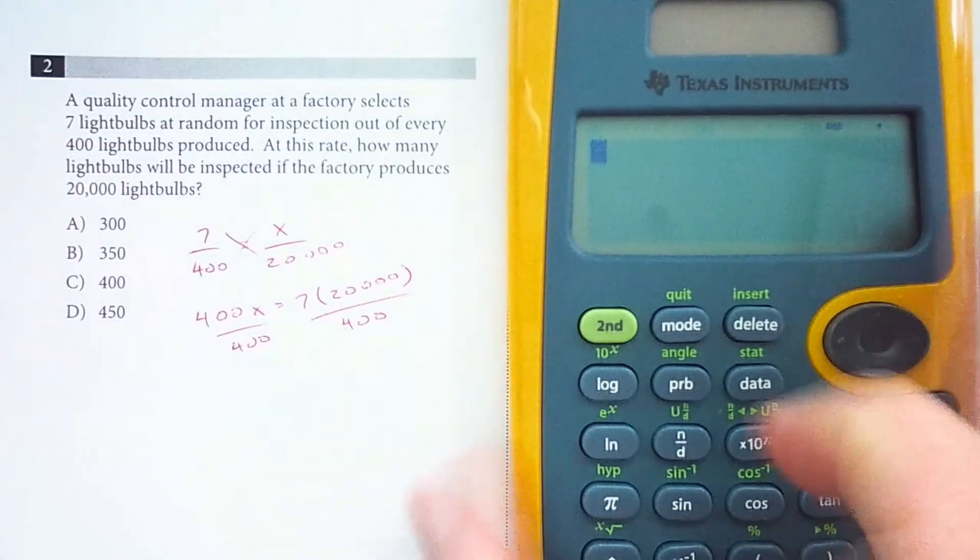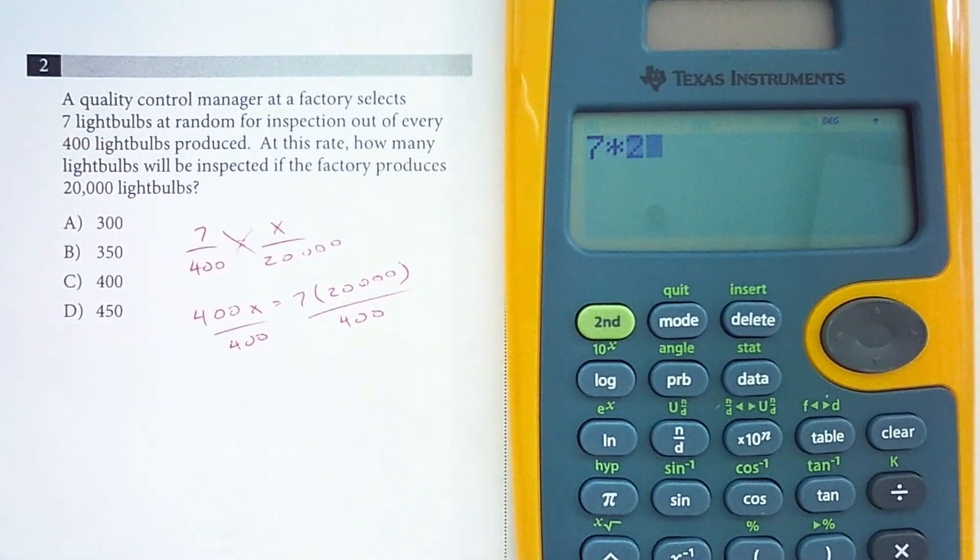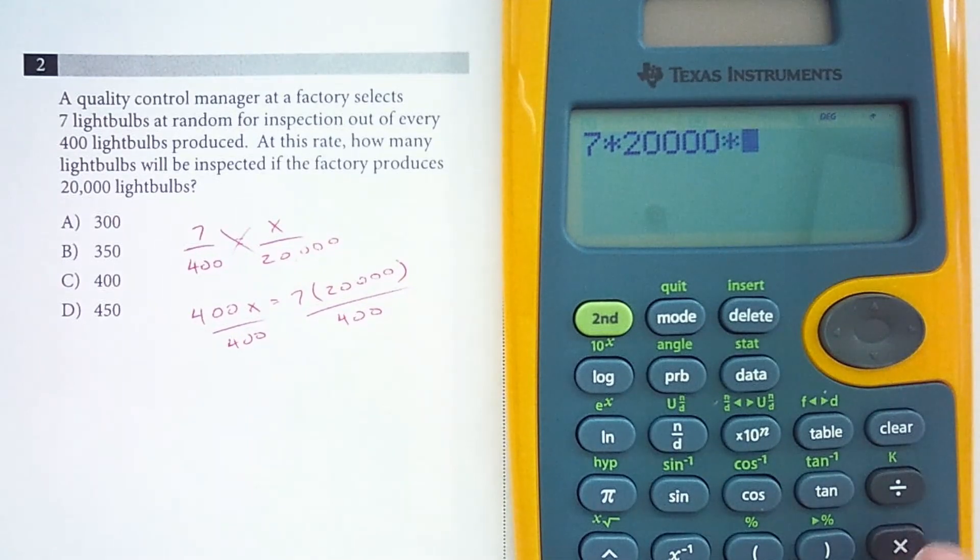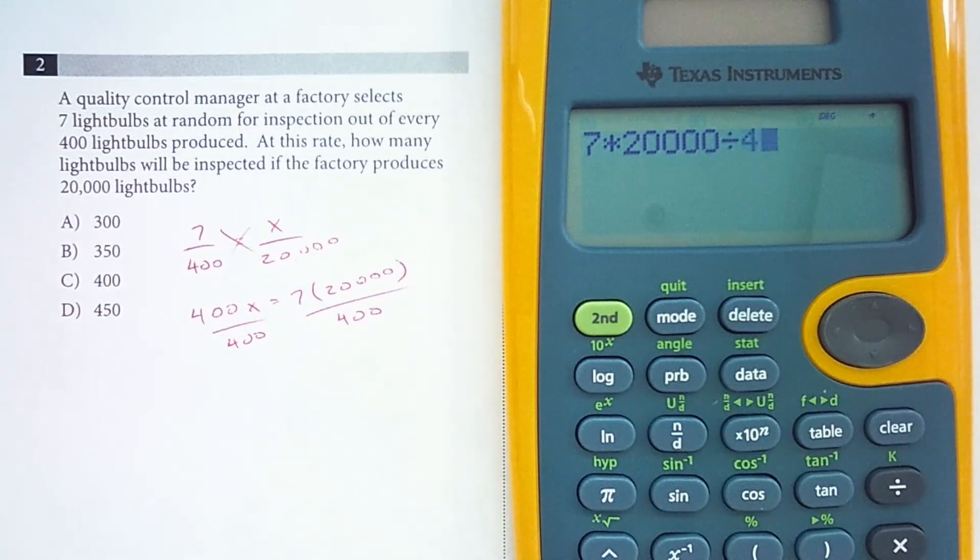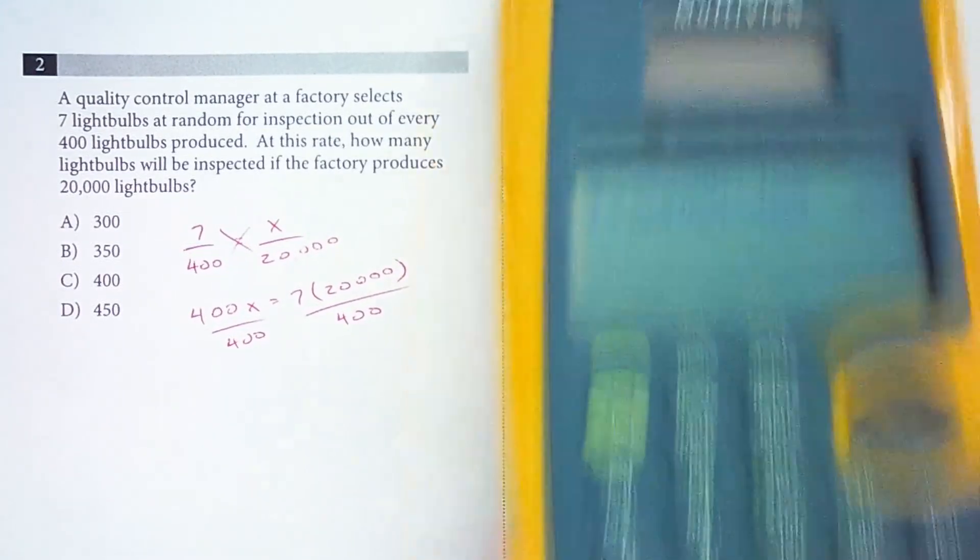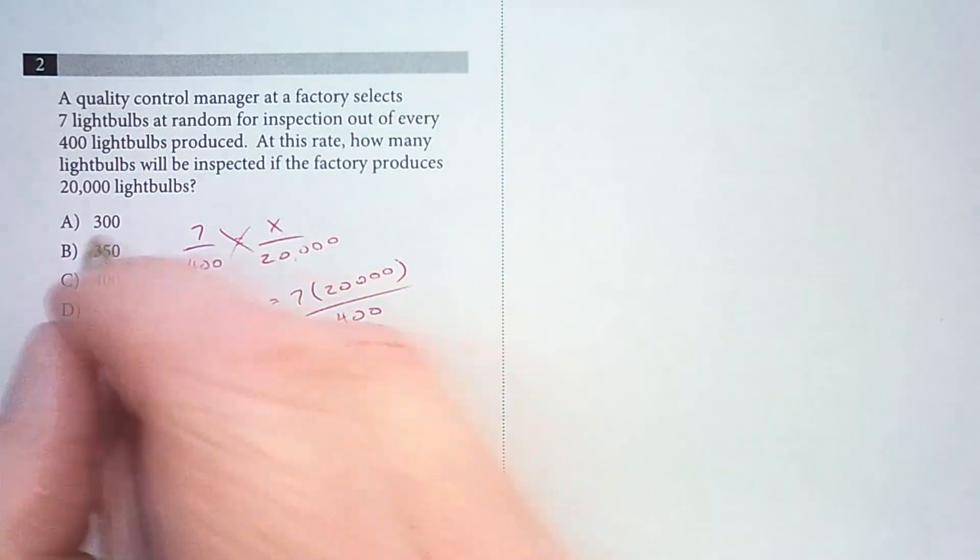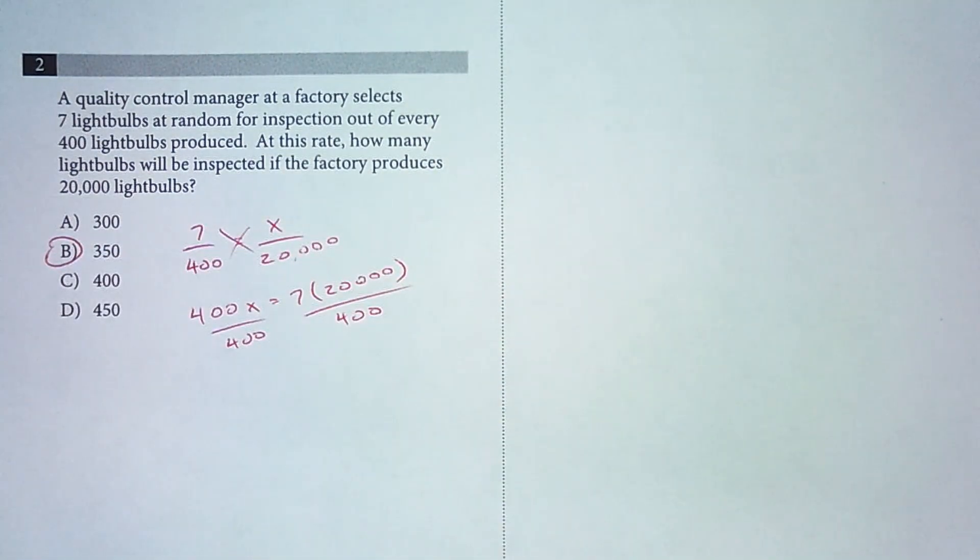So we have seven times 20,000 divided by 400, and that is 350. So 350 light bulbs.